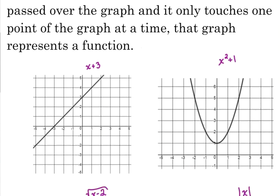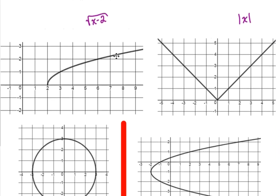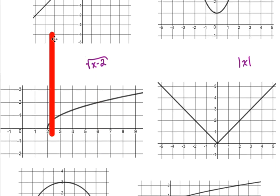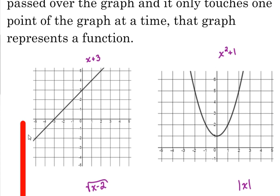For example, let's look at the function x plus 3, and there's my vertical line. x plus 3 is a linear function, quick review of that terminology, but if I take my vertical line here and I pass it over my entire graph, at every instance, it is only touching the function or touching the graph at one point. So x plus 3, yes, absolutely is a function.